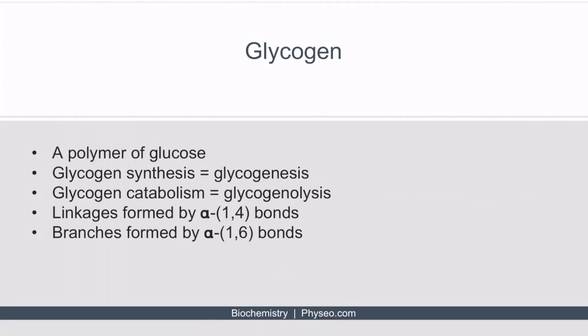Glycogen is a polymer of glucose. When glycogen is synthesized, it's called glycogenesis, which occurs during periods of rest. When it's broken down, it's called glycogenolysis, which occurs to meet the cell's immediate energetic needs. There are two types of bonds that form between glucose molecules: alpha-1,4 bonds and alpha-1,6 bonds.